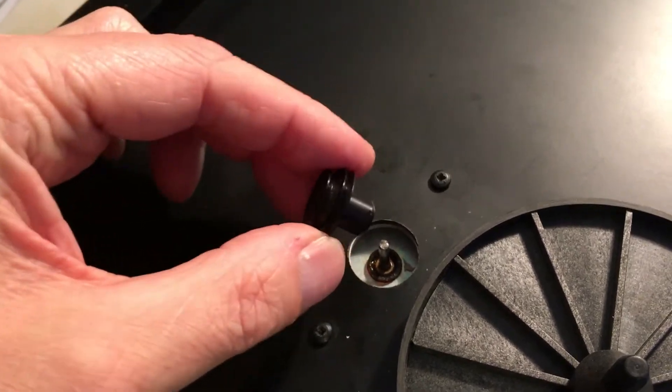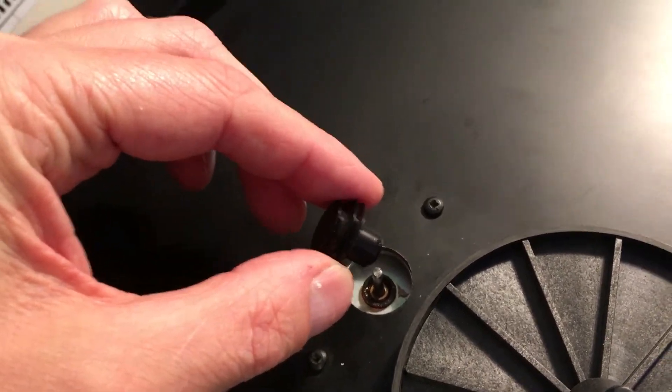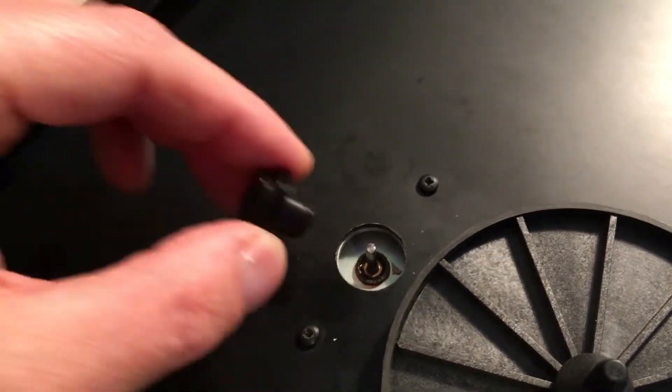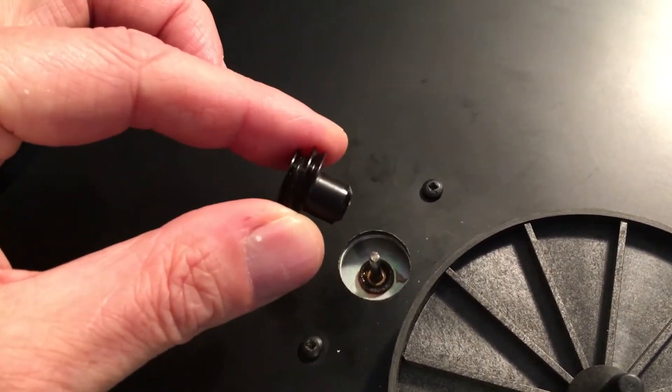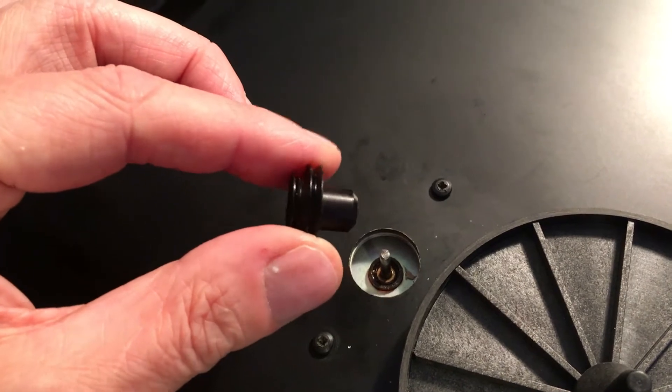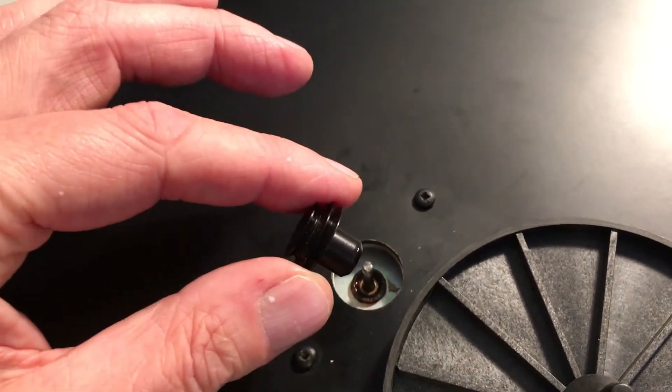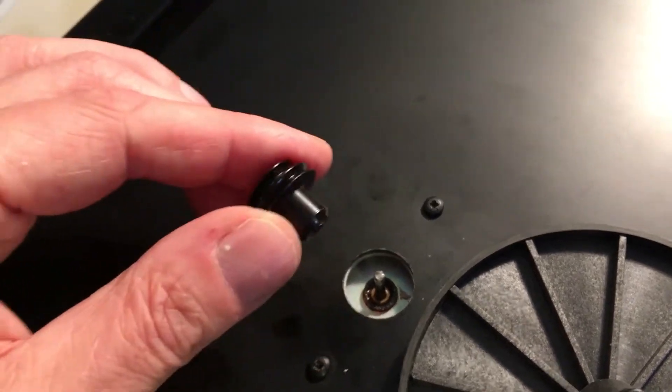Now that should be so firmly attached that you could almost lift the turntable, I mean obviously don't lift the turntable a little bit, but you should be able to put a lot of force on that and pull the motor up, and it will never come off because they're sort of pressed on at the factory.